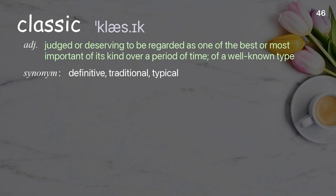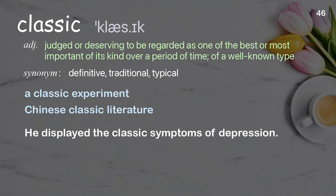Classic: judged or deserving to be regarded as one of the best or most important of its kind over a period of time; of a well-known type. Examples: a classic experiment, Chinese classic literature. He displayed the classic symptoms of depression.